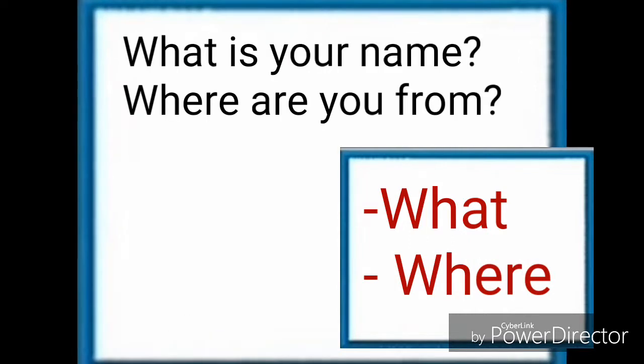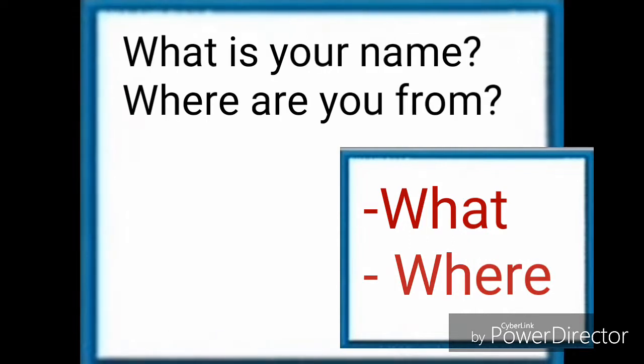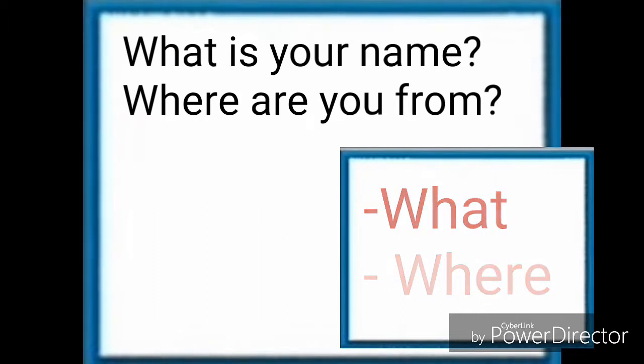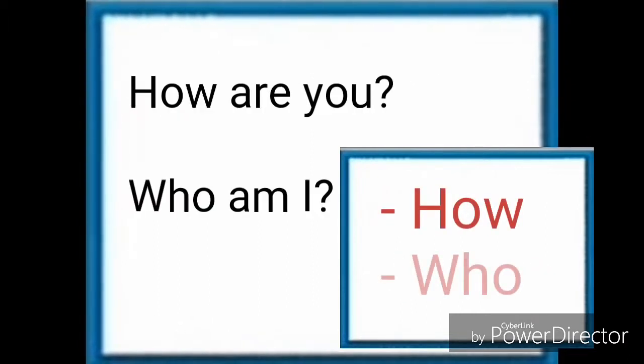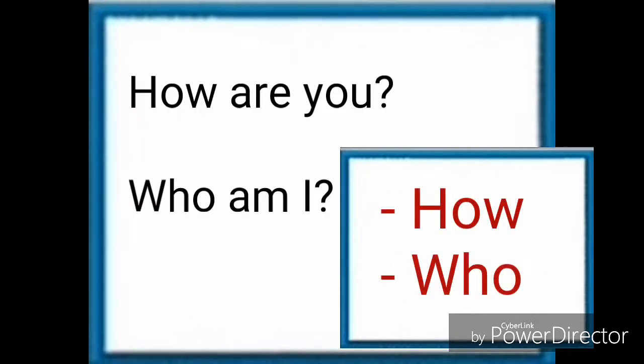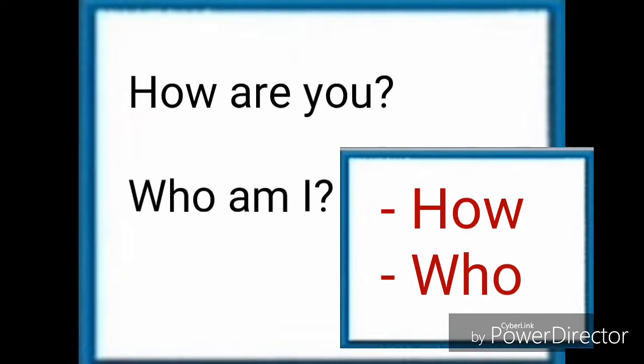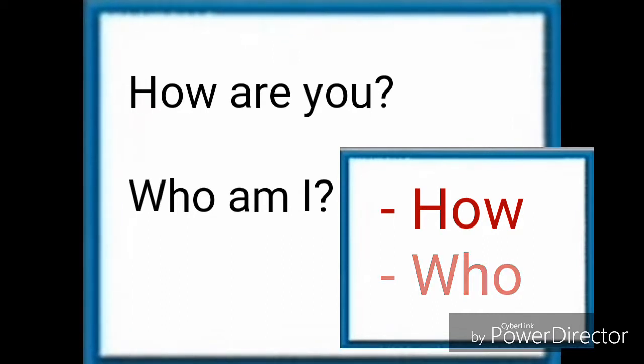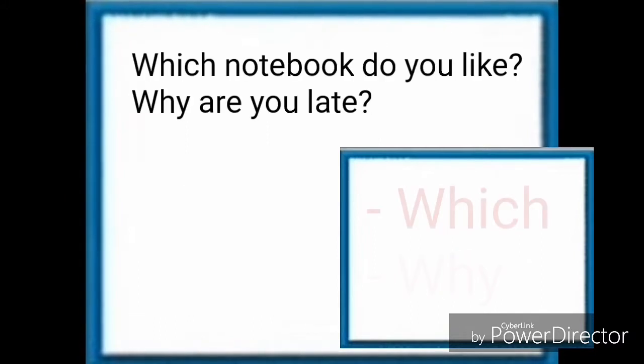Let's take a look at our first two examples. We have what and where. For what and where, we have the first two questions: What is your name? Where are you from? For how and who, we have: How are you? And who am I?